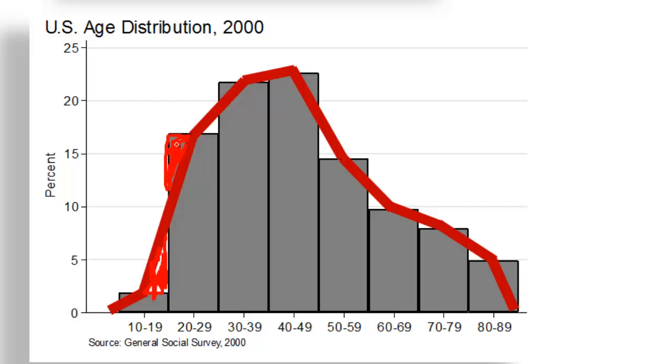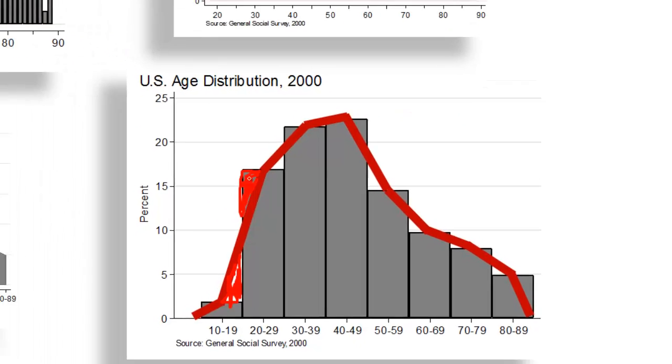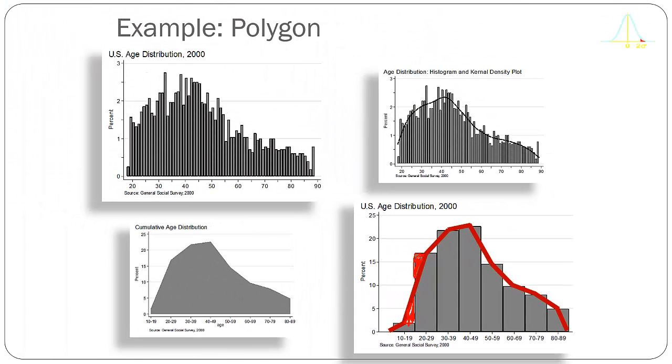It turns out that if we could measure or calculate the area of all the pieces of the histogram that are not part of the polygon, and all the pieces of the polygon that are not part of the histogram, and we would add those numbers up, they would net out to zero, so that the area under the histogram is equal to the area under the polygon.